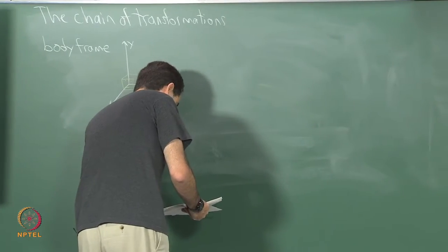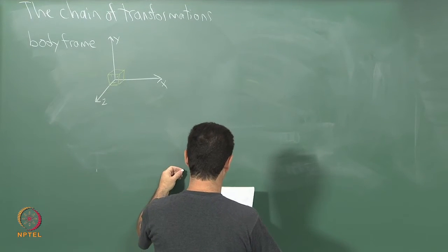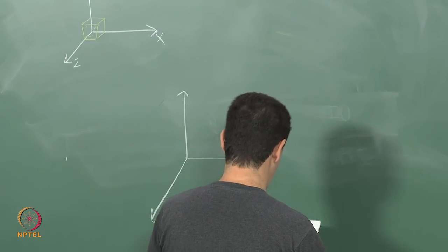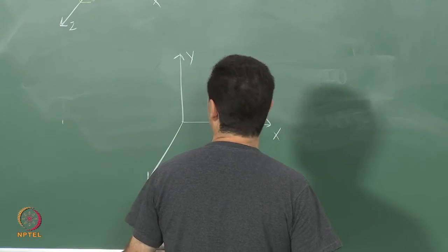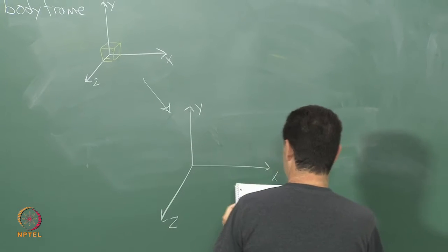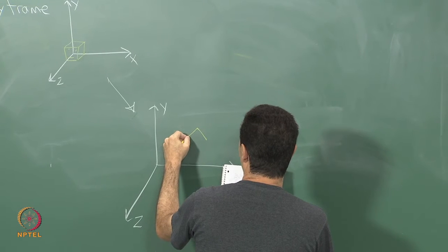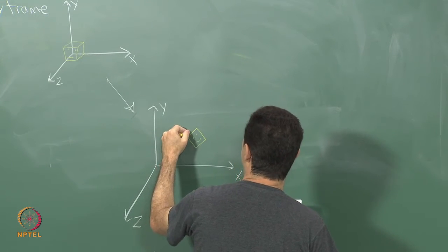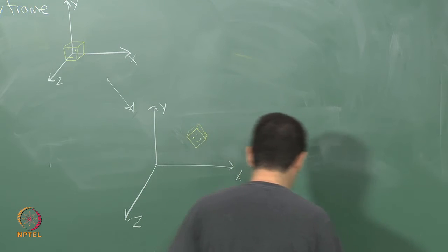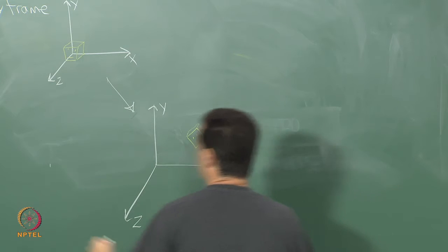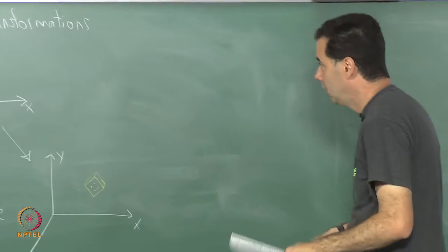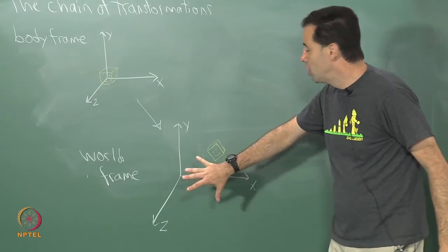Some kind of object appears in this frame. We apply the transformations — for example, the homogeneous transformation matrix — to perform the appropriate rotation and translation to move that body into the world, or embed that body in the world frame appropriately. That is one step. Through the transformation this object — in this case a cube face — gets moved somewhere in the world. This is just an illustration, and this is the world frame.